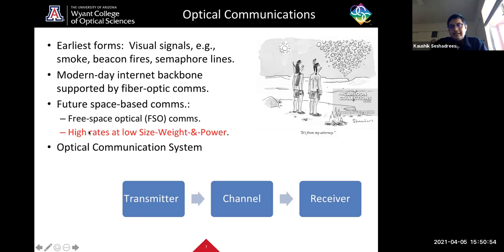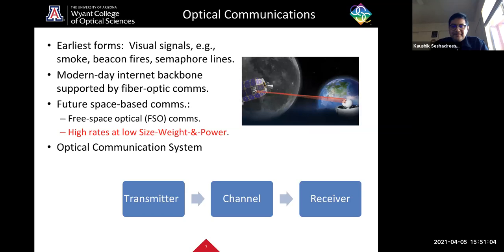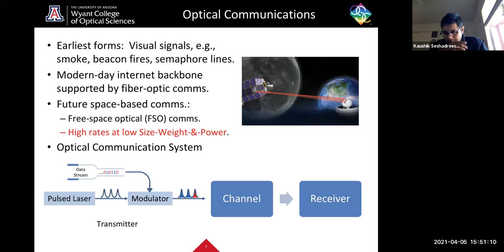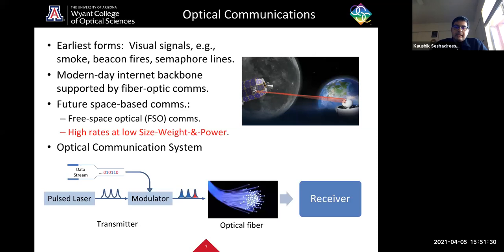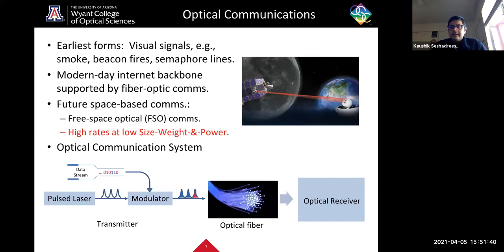Any optical communication system consists of a transmitter, a channel, and a receiver. An optical transmitter typically consists of a pulsed laser source and a modulator that encodes your data stream onto these pulses, either in the amplitude or the phase of the pulses. The channel is either an optical fiber or a free space link. The receiver typically consists of some linear optical elements like beam splitters and phase shifters, perhaps a local oscillator followed by photo detectors.